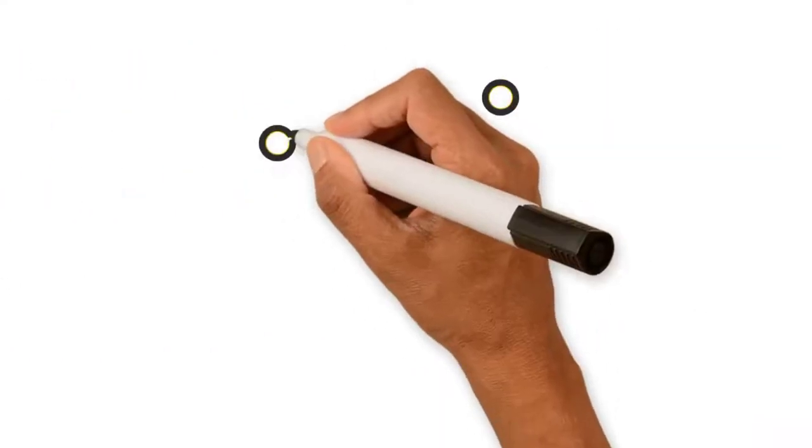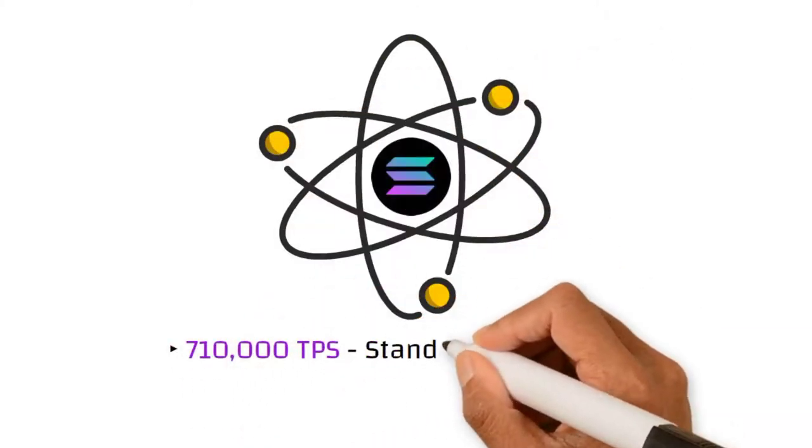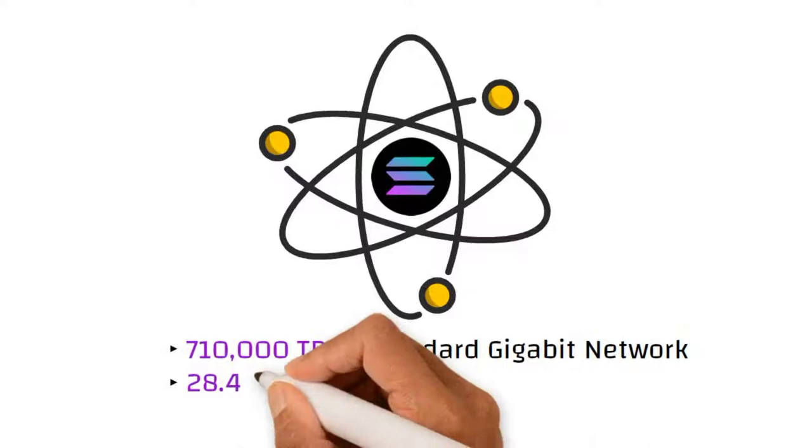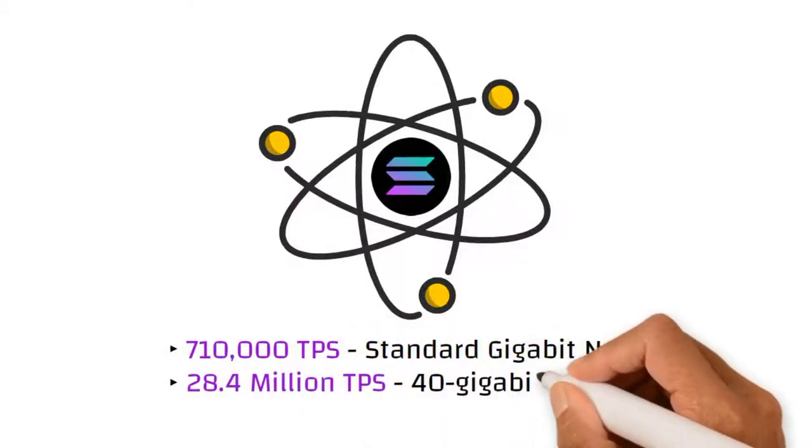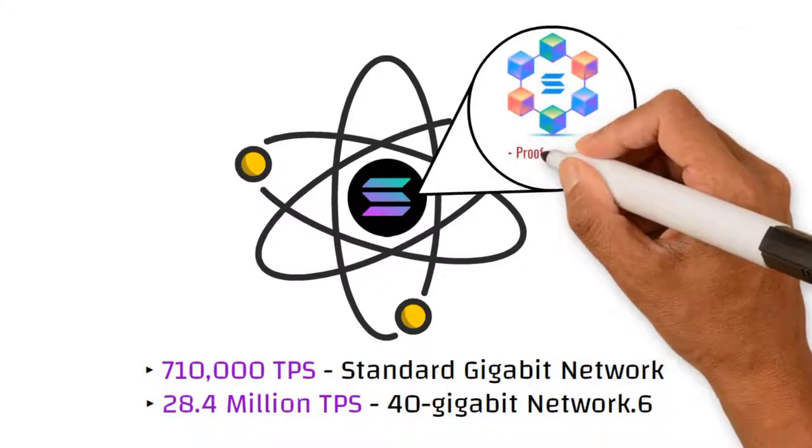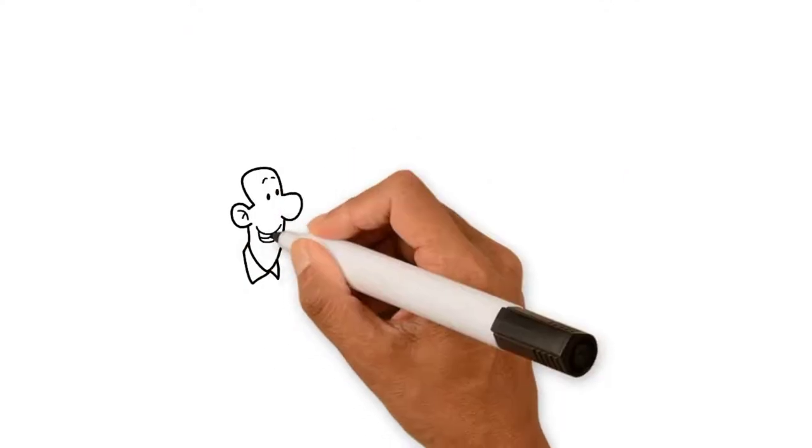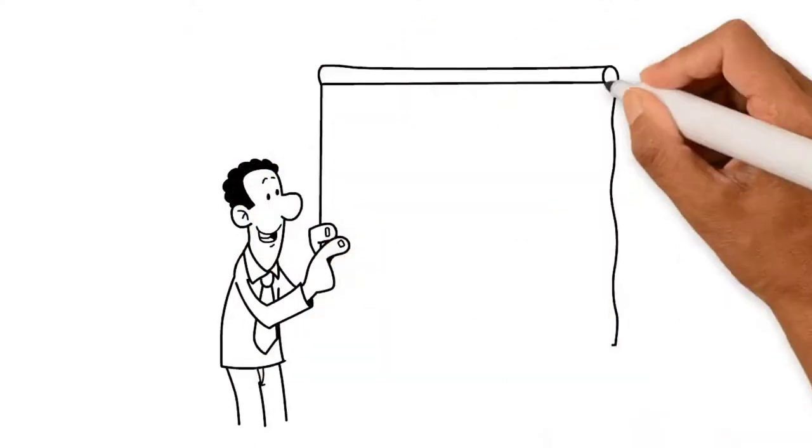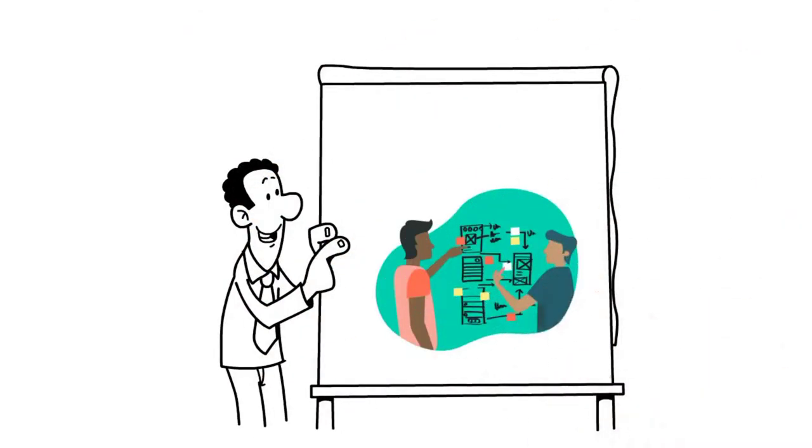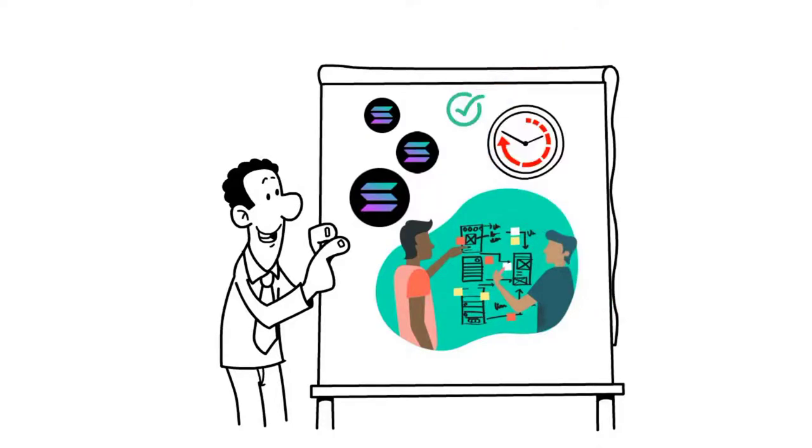Solana's architecture describes a theoretical upper limit of 710,000 TPS on a standard gigabit network and 28.4 million TPS on a 40 gigabit network. Solana's blockchain operates on both a proof-of-history and proof-of-stake model. Proof-of-stake permits validators to verify transactions based on how many coins or tokens they hold. Proof-of-history allows those transactions to be time-stamped and verified very quickly.